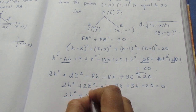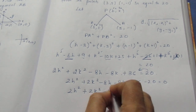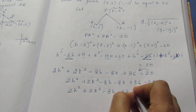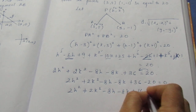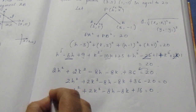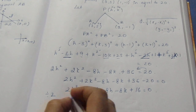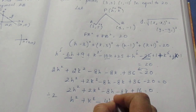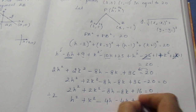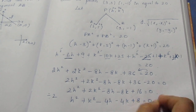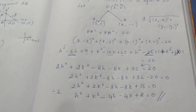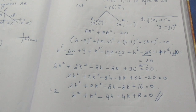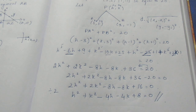This gives 2h² + 2k² - 8h - 8k + 16 = 0. Dividing throughout by 2, we get h² + k² - 4h - 4k + 8 = 0. This is the equation of the locus of the point. Thank you.